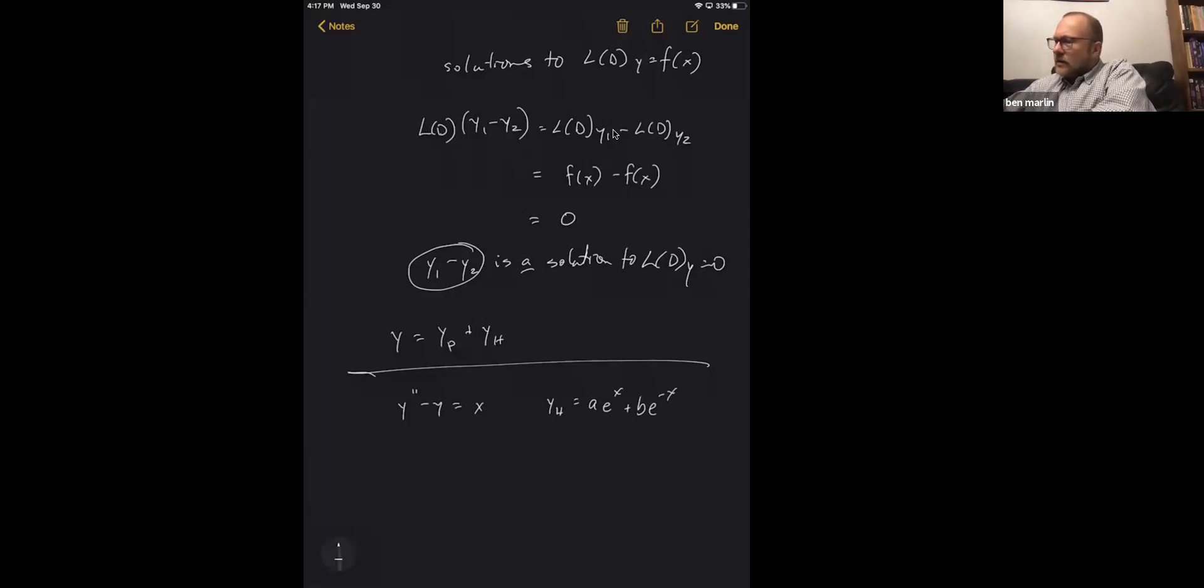So now if we were to choose the y sub p—and I'm just picking out something that will work—picking out minus x, then our general solution is going to be minus x plus a e to the x plus b e to the minus x.